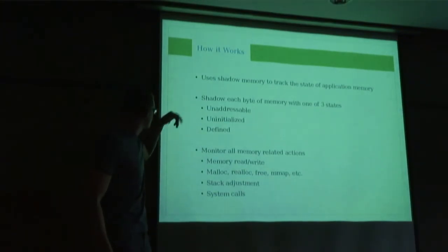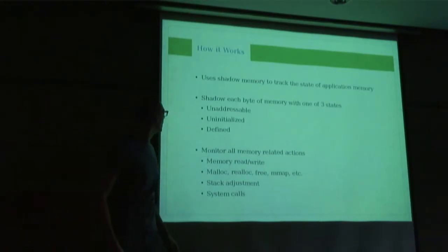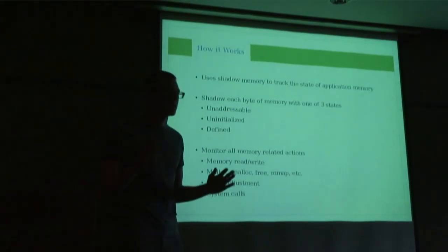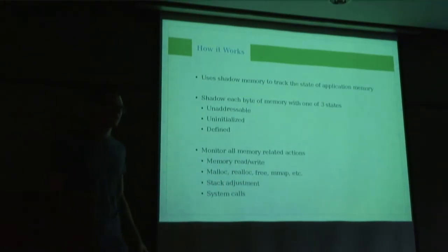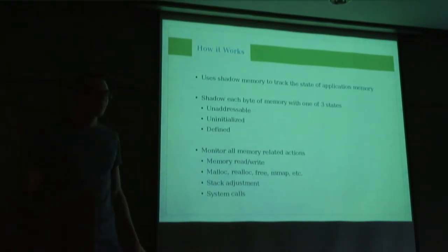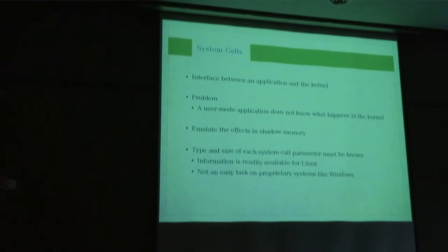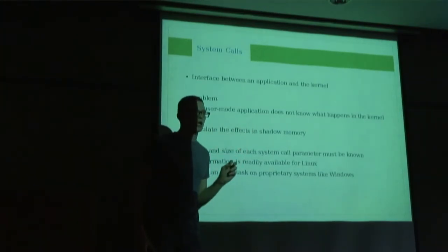The types of errors it detects: first, unaddressable — if you have memory you haven't allocated and your application tries to touch it, it'll catch that. A use-after-free vulnerability is an example — if you free up some memory and then try to use it again, it'll catch that. Uninitialized reads — memory which is addressable but you haven't written anything to it, and if you try to read from it, it'll catch that. And memory leaks, which are pretty self-explanatory. It uses shadow memory with three states: unaddressable, uninitialized, and defined. It starts out unaddressable; when you allocate something, it goes to defined state; when you deallocate, it goes back to unaddressable.